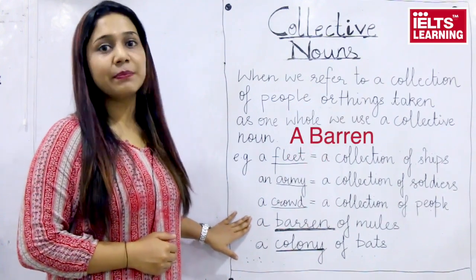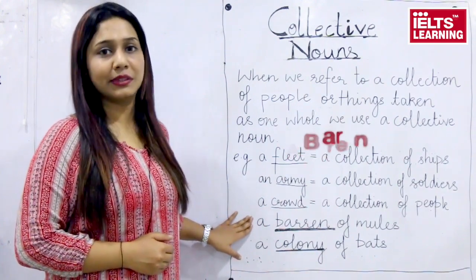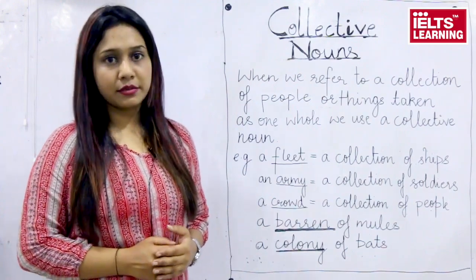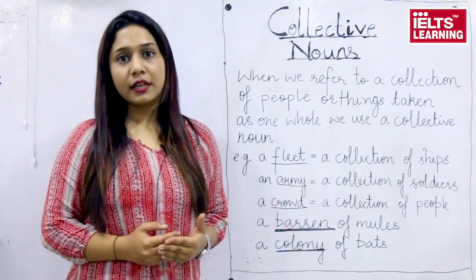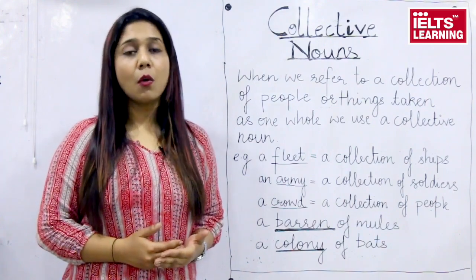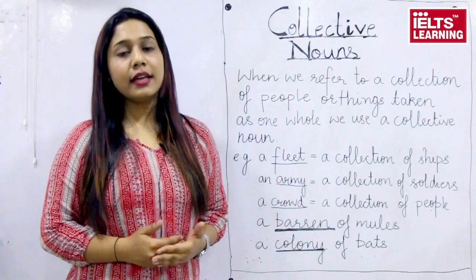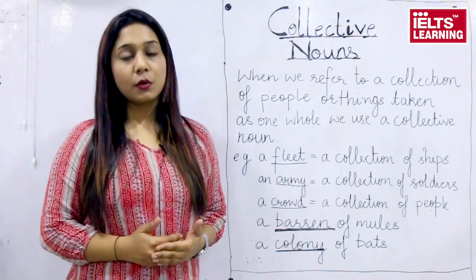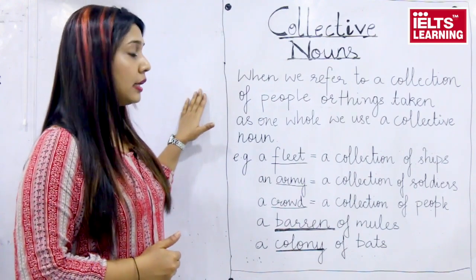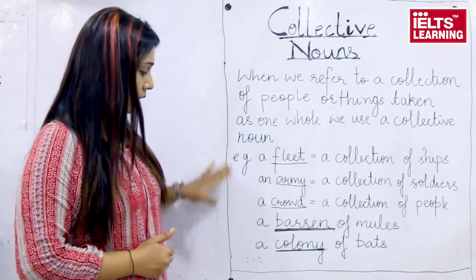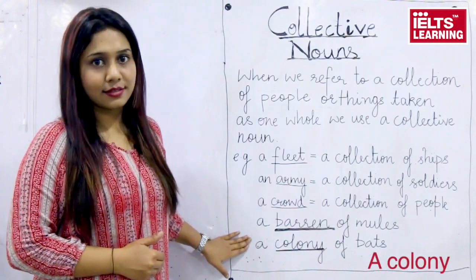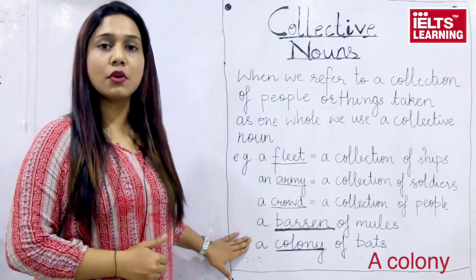A baron of mules is an example of a collective noun. Now why do we use collective nouns? Every time we see a group of things or people, we use 'many' or 'a lot', but rather than using these words, we can simply use better words — the collective nouns. For instance, a colony of bats.